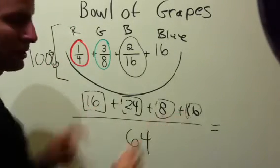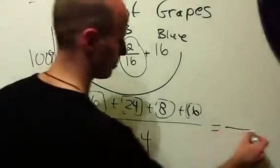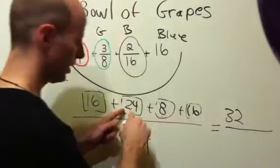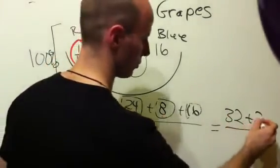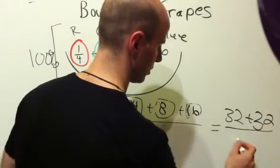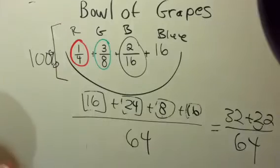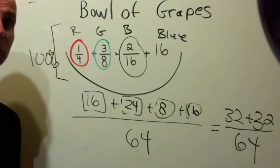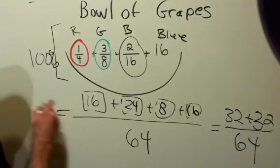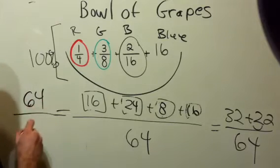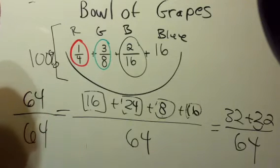16 plus 16 is 32, 24 plus 8 is 32. This looks nice. When I add up all my parts, I get 32 plus 32, which would be 64. So altogether, all my parts add up to 64. My whole is 64.